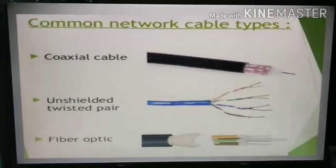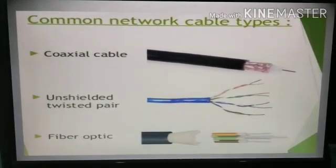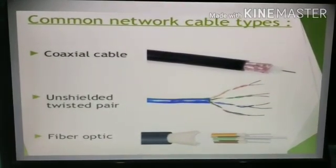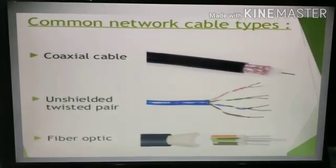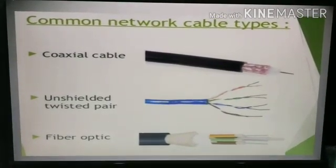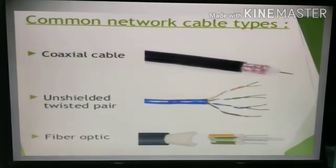The twisting in twisted pair reduces interference. The wires are commonly used for communication within buildings and in telephone networks.